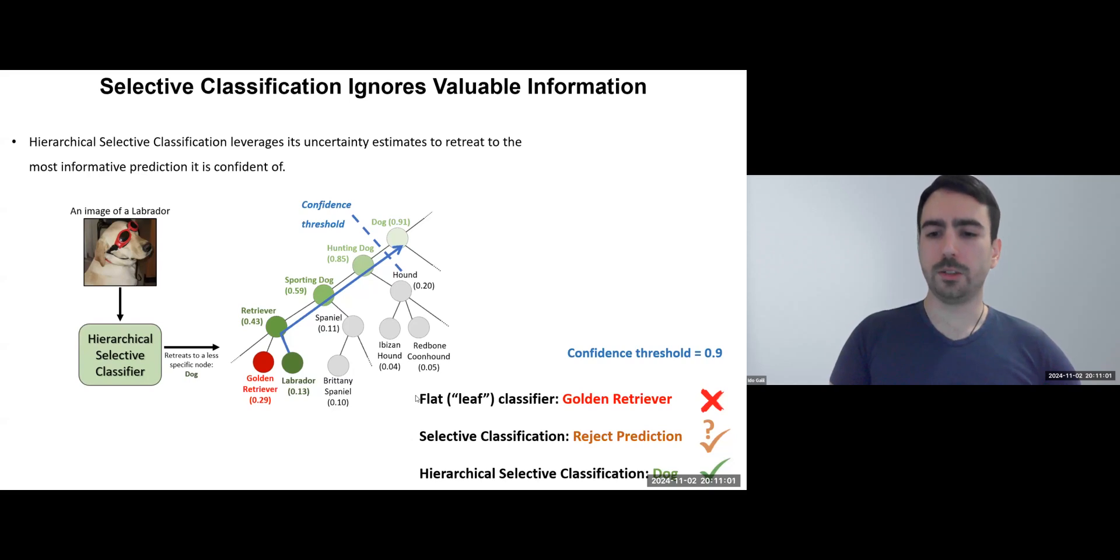By setting a 0.9 threshold, we climbed the hierarchy to find a confident node, here providing useful information that the image is a dog.